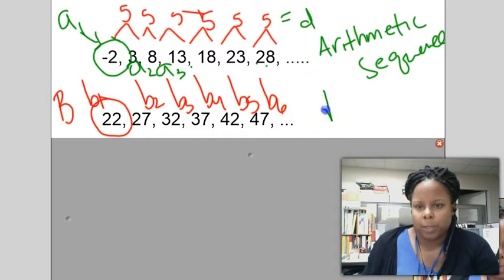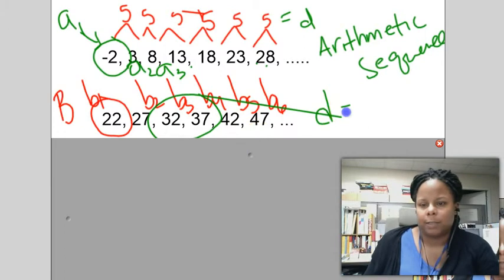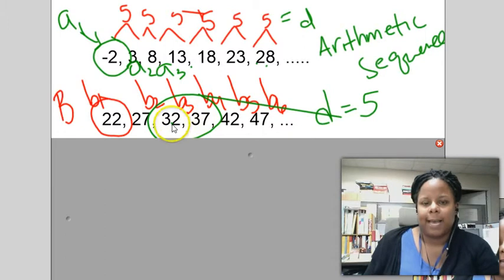So my question is for this problem, what is d? What is the common difference between any two consecutive terms? 27 to 32, the difference is 5. To go from this one to get to 37, I add 5 to 32. And I can use this to figure out the other numbers.